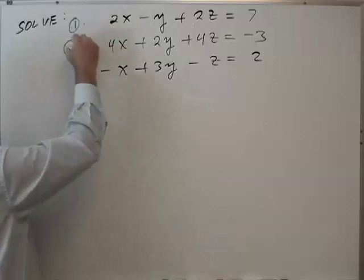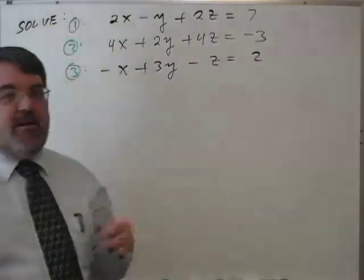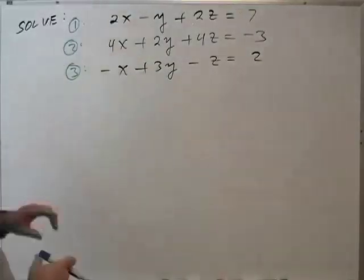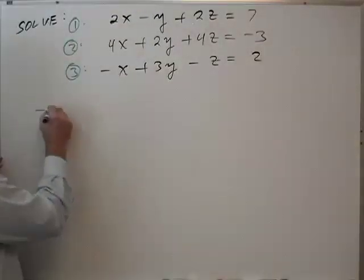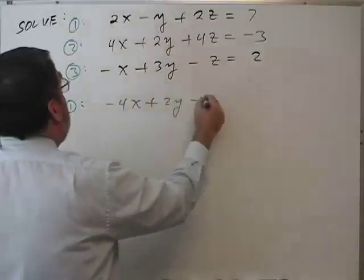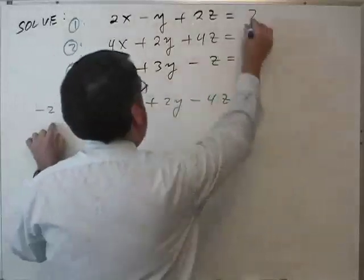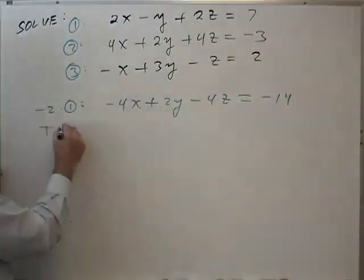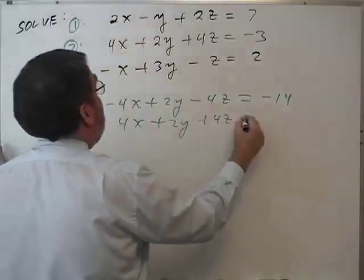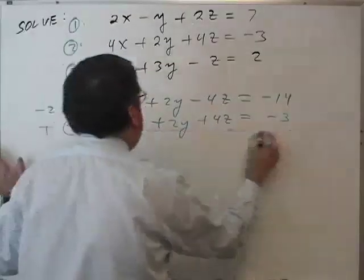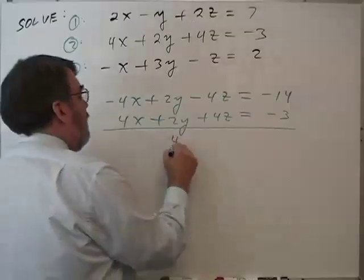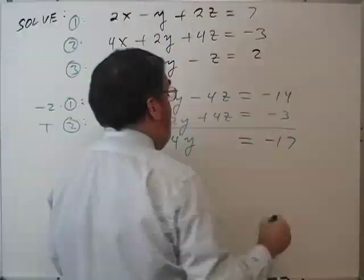Equation 1, 2, and 3. Since I've done a couple more video examples, I'm going to work this one pretty fast so we can get through it. I'm going to take negative 2 times equation 1. And that gives us negative 4x plus 2y minus 4z equals negative 14. And I'm going to add equation 2. 4x plus 2y plus 4z equals negative 3. Combining these, like we said, in this case the x's and z's will cancel together.